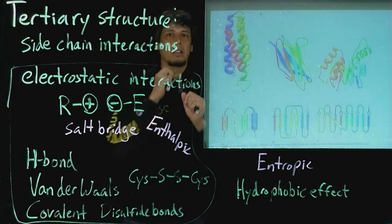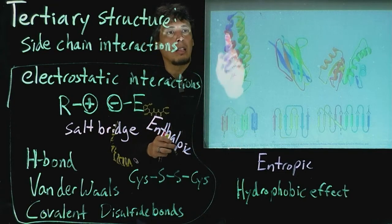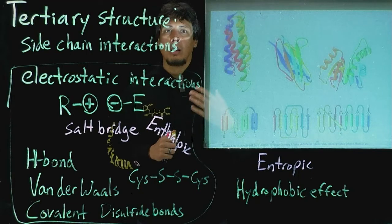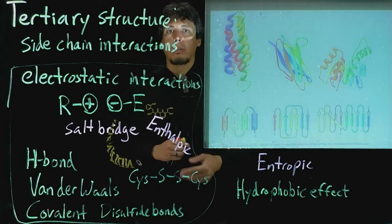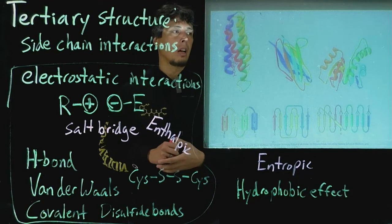And so what you expect to see, and what you largely see in many proteins, is that the interior of the protein are a lot of hydrophobic residues, things like tryptophan or isoleucine or leucine or valine.